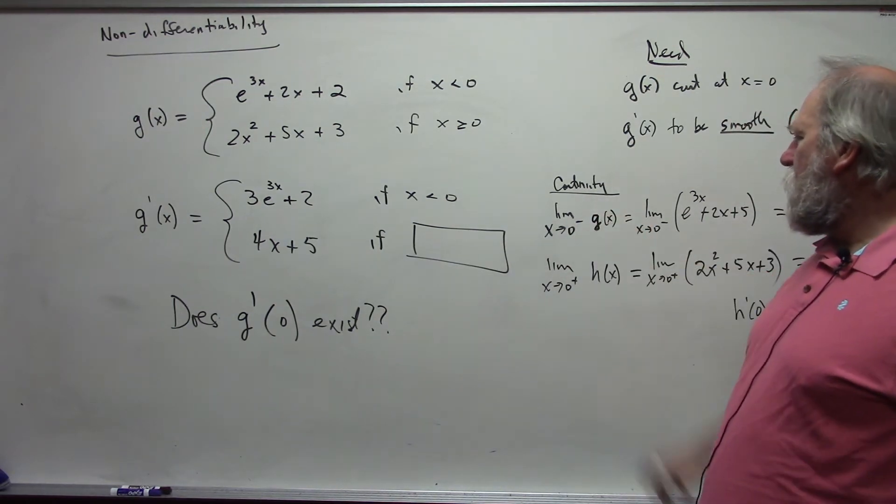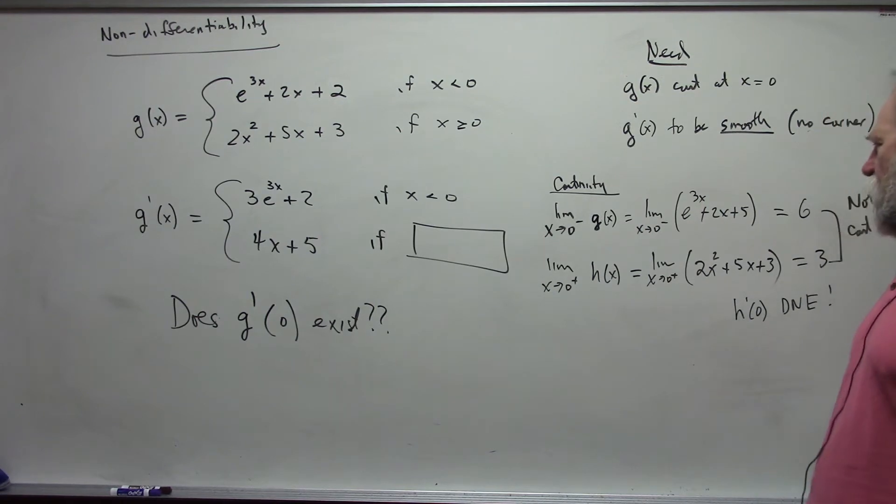I fixed this. So the limit as x approaches 0 from the left is now 3. I didn't change the right. So therefore, this is now continuous at x equals 0.